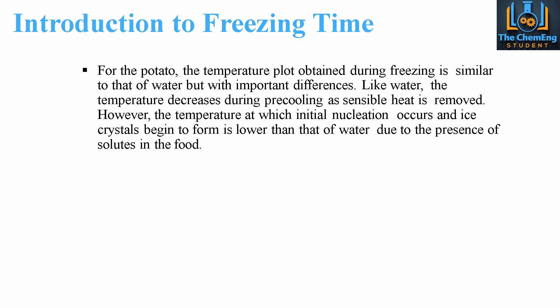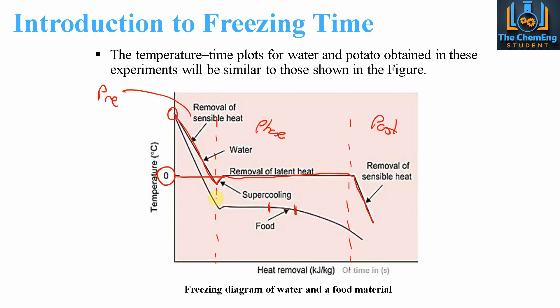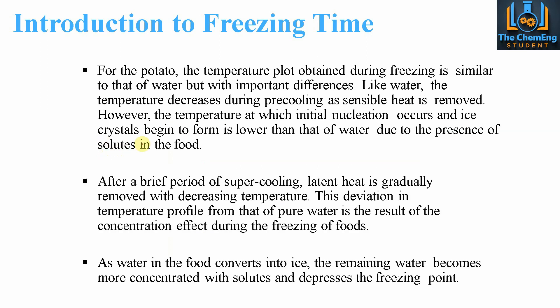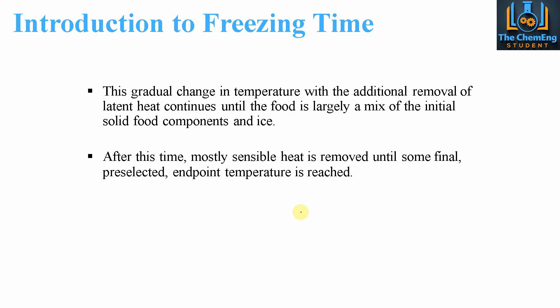The temperature at which the initial nucleation occurs and the ice crystals begin to form is much lower than that of water — this is to account for the solutes present in the food. After the brief period of supercooling, the latent heat is gradually removed, and then it slowly goes into the post-freezing section, where the remaining water becomes more concentrated within the solute, and this depresses the freezing point. This gradual change in temperature, with the additional removal of latent heat, continues until the food is largely a mix of the initial solid food components and ice rather than pure water. After this, the remaining sensible heat is removed and we reach the end-point temperature.